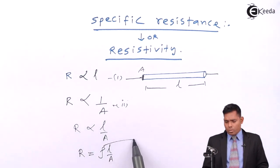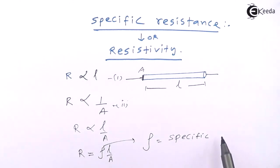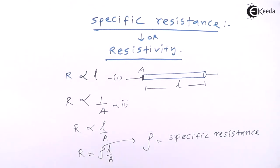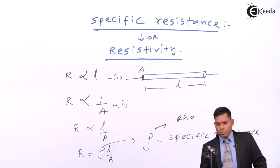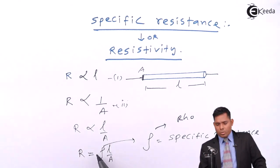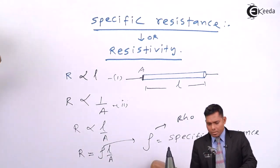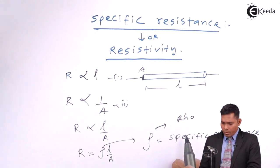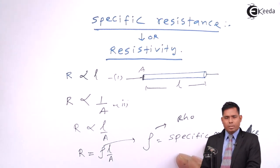This ρ (rho) is called specific resistance or resistivity of the material. It is a material-specific property; it depends on the material of the conductor.